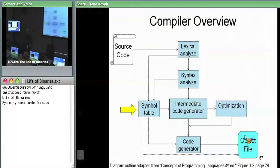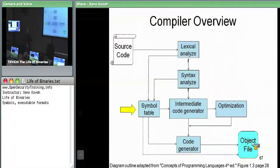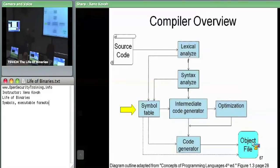The symbol table ultimately can find its way into the object file. The information in the object file is specifically there to help the linker find stuff. First, to help the linker find symbols which are undefined within the given object file. Second, in some specific cases, the assembly output will be devoid of addresses — you may put a move instruction with a placeholder address, telling the linker to fill in that address later when the combined file gets generated.